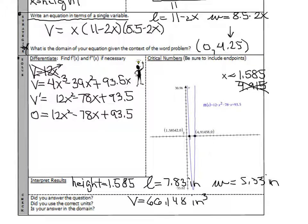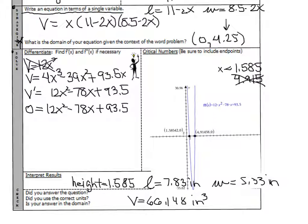Now, which groups got that right? I'm very interested to know. In finishing off this protocol, check yourself: did you answer the question? Yes, we found the three dimensions. Did you use units? Yes. Is your answer in the domain? Yes, it is. This is the protocol I'd like you to use initially until you get the feel for these optimization problems — you're going to be doing lots of practice. I hope to see you guys soon. Bye-bye.